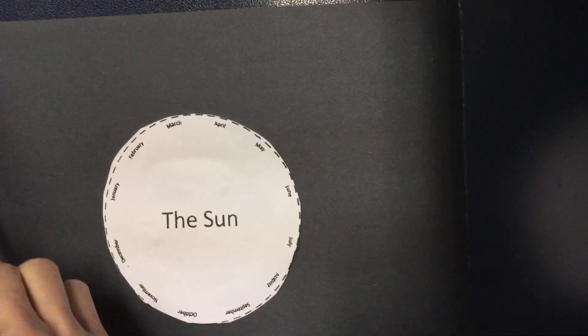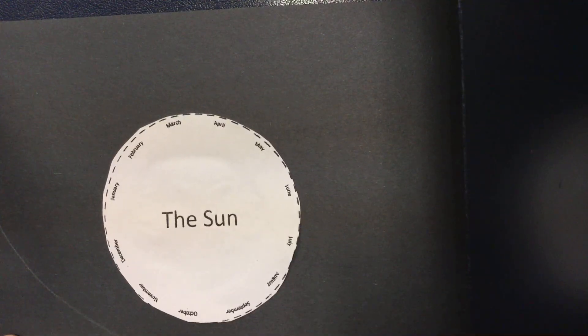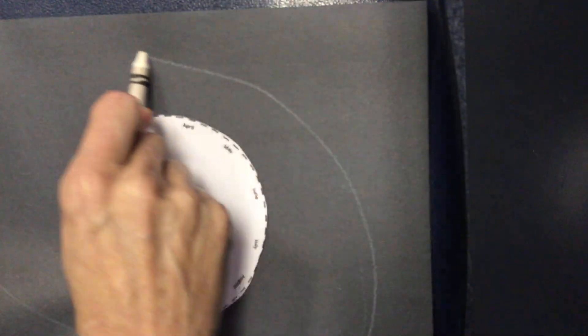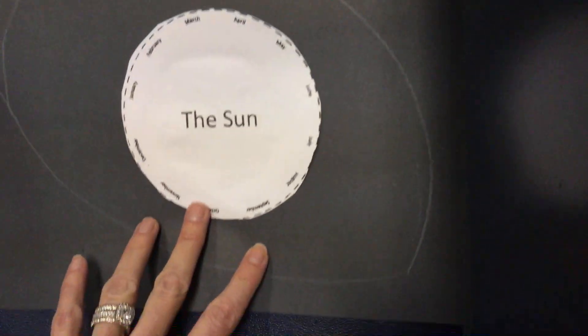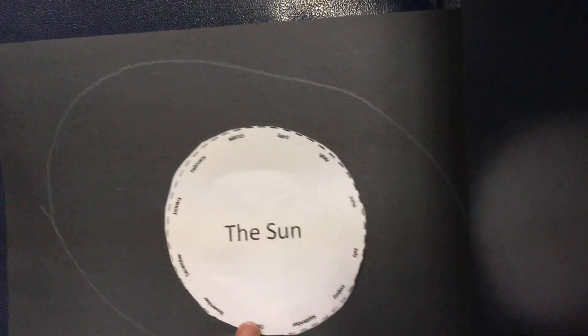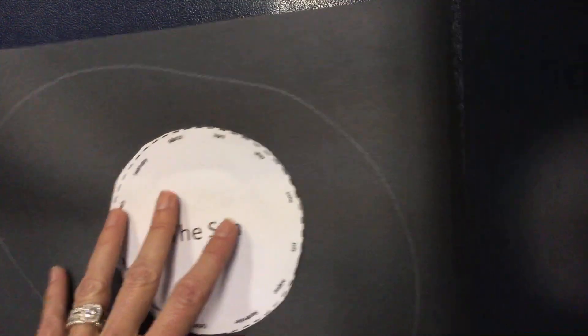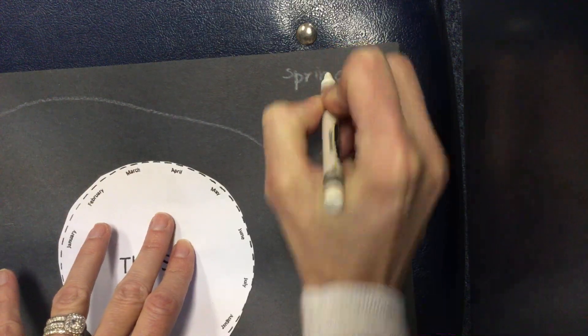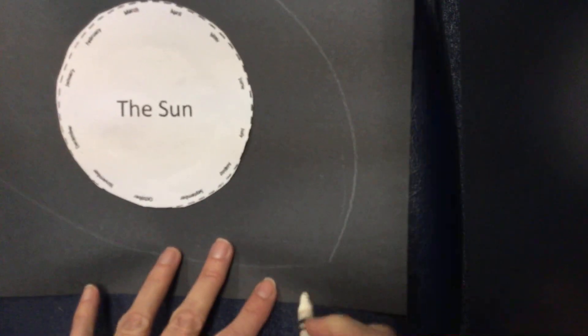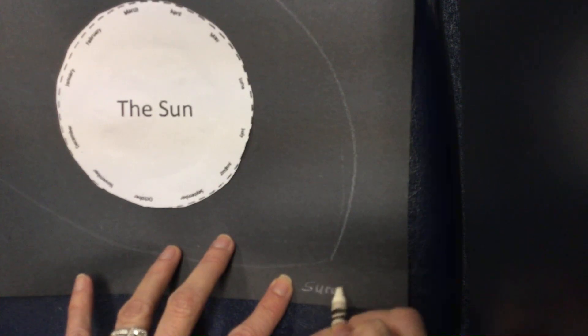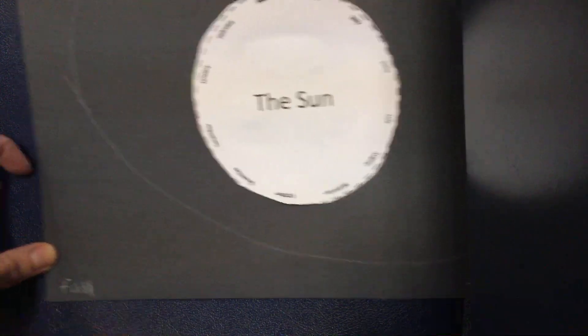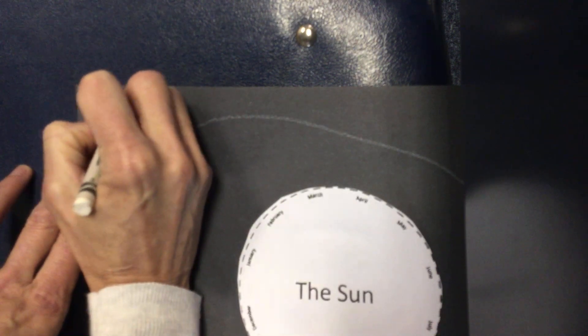The way we can show it on our paper is to actually make this flattened oval. You can kind of see around how I've done it in a flattened oval. Then up in the right-hand corner you can write spring, in the bottom corner summer, in the left-hand corner fall, and then the top left-hand corner winter. This is all based on our northern hemisphere, which is where we live.